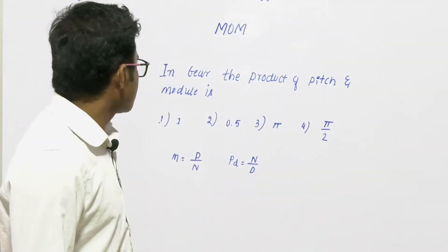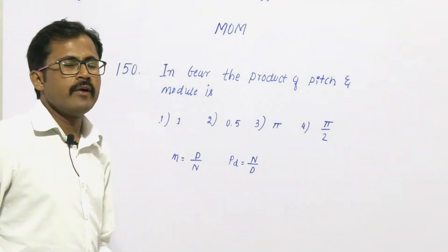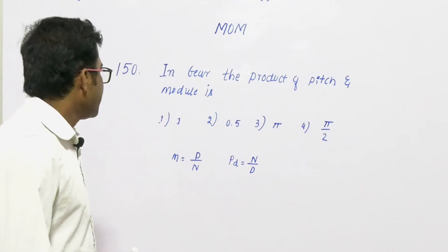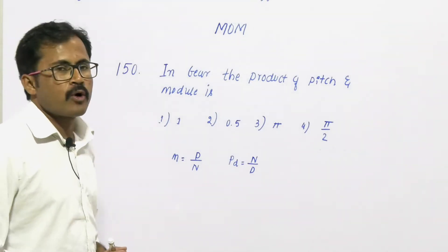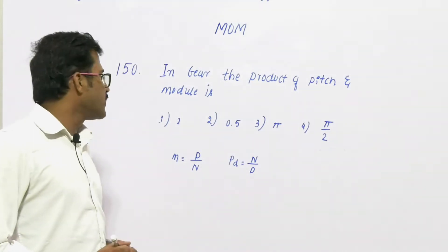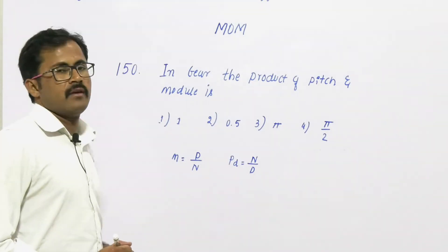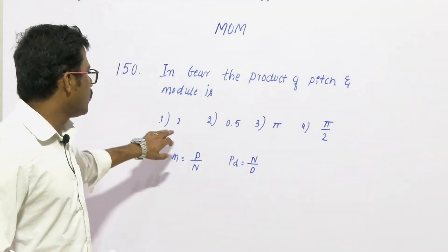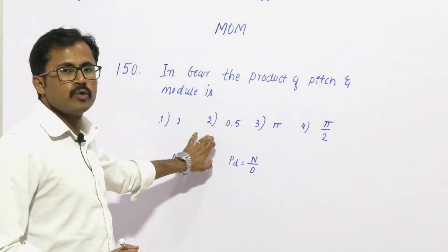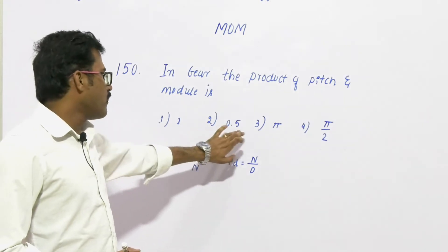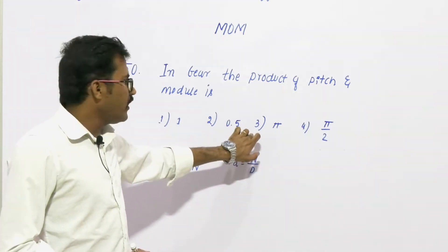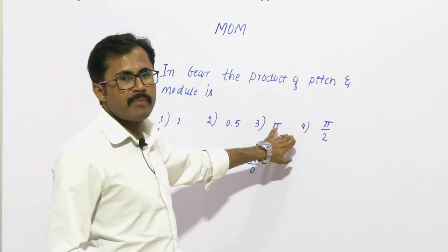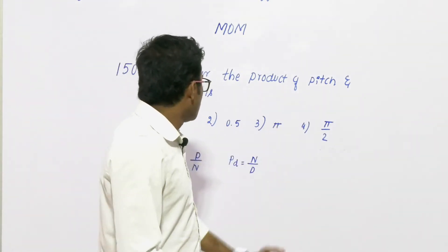The next question, question number 150: in a gear, the product of pitch and module is — option 1: 1, option 2: 0.5, option 3: pi, option 4: pi by 2.